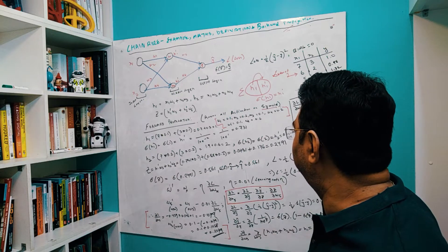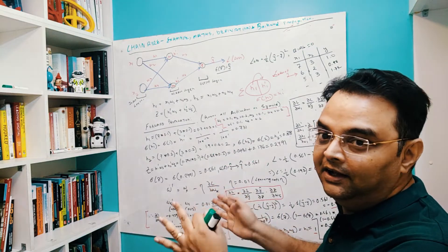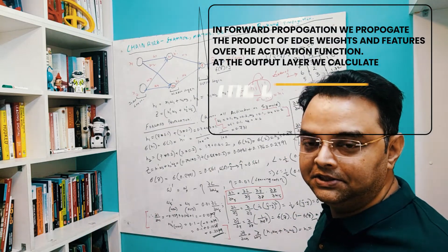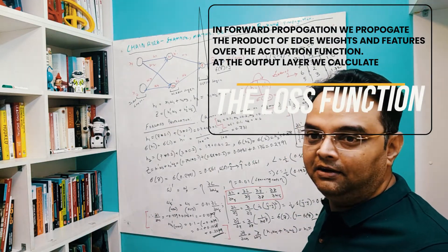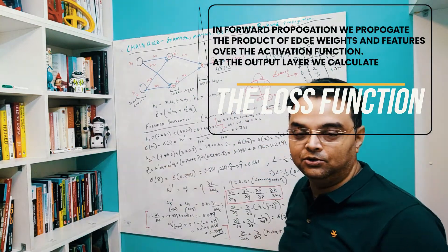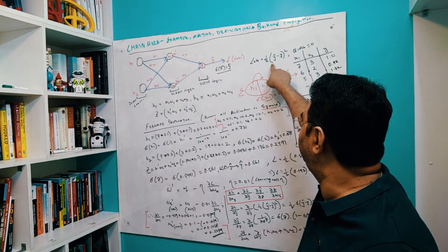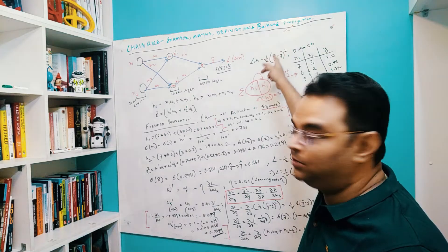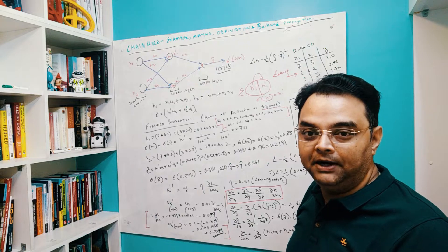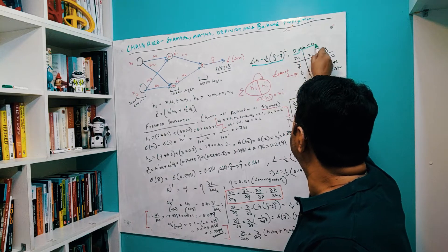Let's start with the basic formulas, then do the forward propagation, calculate the error, and then the backward propagation. In forward propagation we propagate the features through the activation functions to get the final y-hat. The loss function is (1/2)(y-hat minus y)², which is half the square of the difference between the predicted and actual value. Bias is taken as zero to simplify calculations.